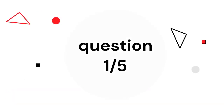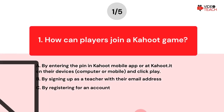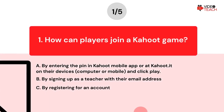Question number one. How can players join a Kahoot game? Option A: By entering the pin in the Kahoot mobile app or at Kahoot.it on their devices, computer or mobile, and click play. Option B: By signing up as a teacher with their email address. Option C: By registering for an account.